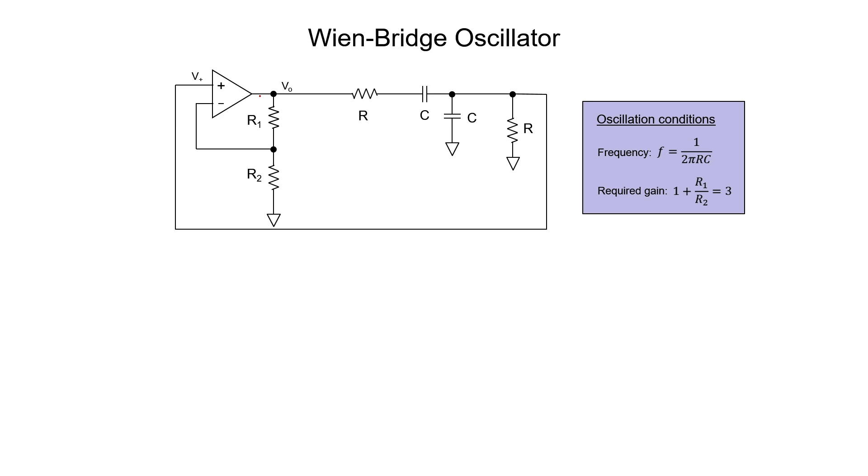In the analysis that we just carried out, we assumed basically ideal components. In summary, the oscillation conditions give us a single frequency from this circuit and a required gain of 3. But as I just mentioned, we're going to have to actually give the circuit a gain higher than 3 in order for it to work.